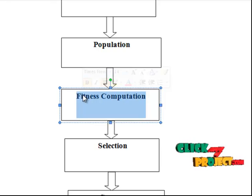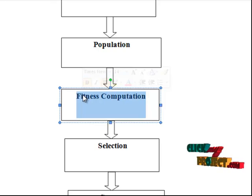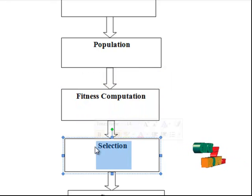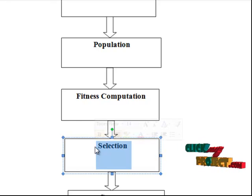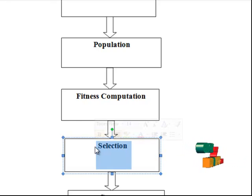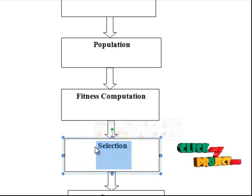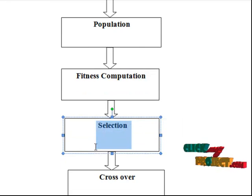A low value of inter-cluster spread is characteristic of efficient clustering. The next step is selection. This fitness value is used to associate a probability of selection with each individual chromosome. We apply Roulette-Wheel selection, a proportional selection algorithm where the number of copies of the chromosome that go into the mating pool for subsequent operations is proportional to its fitness.